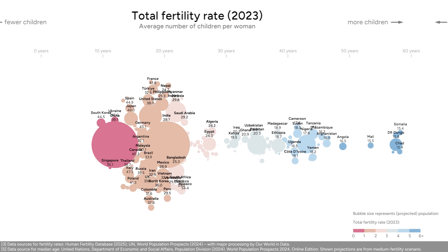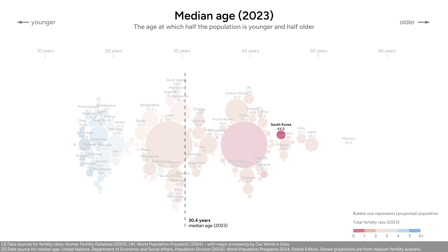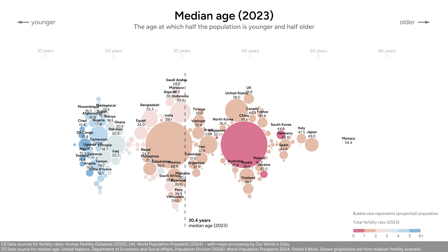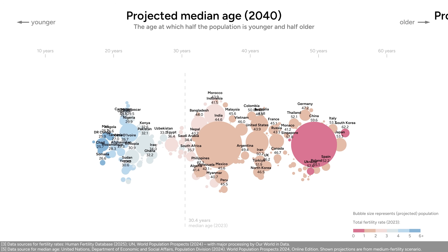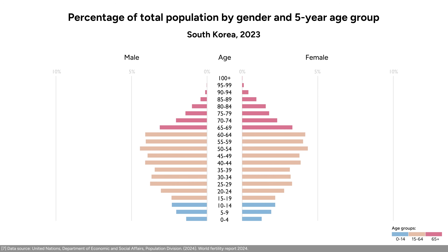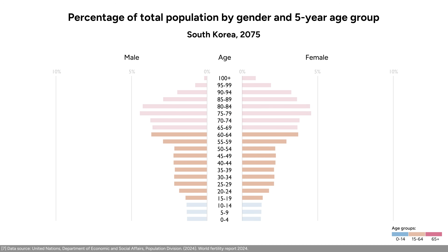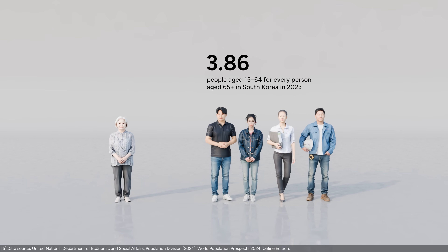South Korea is aging very quickly. The median age of the world is about 30.4 years. Right now, the oldest country in the world, excluding Monaco, is Japan, with a median age of almost 49 years old — that's because they made the demographic transition earlier than South Korea. But South Korea is aging faster. According to UN projections, South Korea overtakes Japan by 2040, and by 2075, they have a median age of 62 years, becoming by far the oldest nation in the world. South Korea currently has about four adults for every elderly person, but in 2075 it might have less than one.